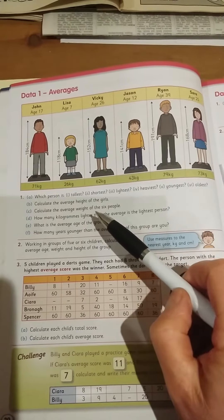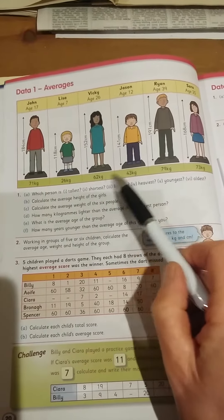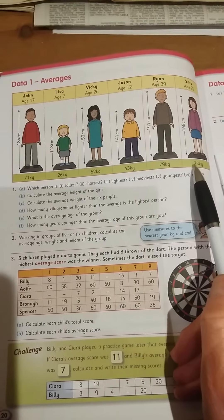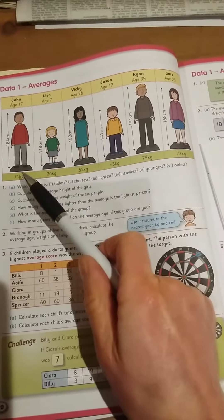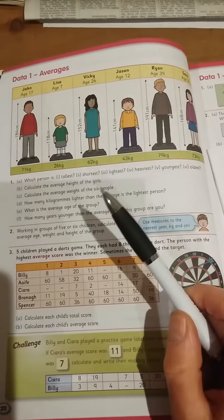Now to calculate the average weight of the 6 people, you add their weights together, you're going to get a number, and divide that number by 1, 2, 3, 4, 5, 6. Divide it by 6.